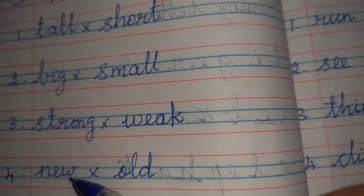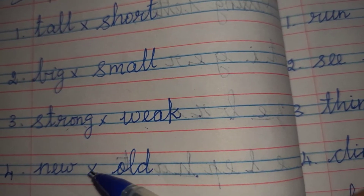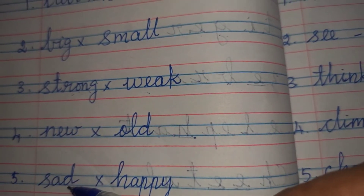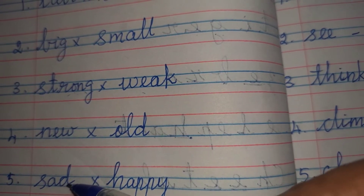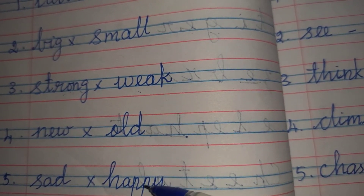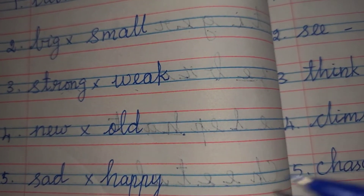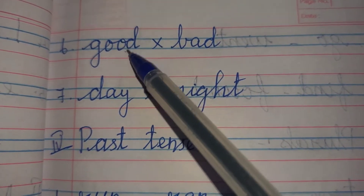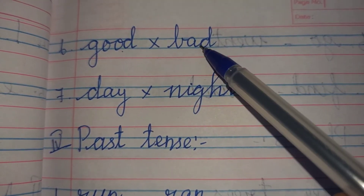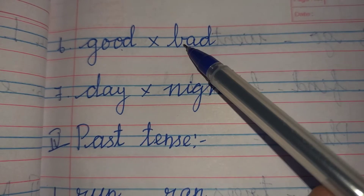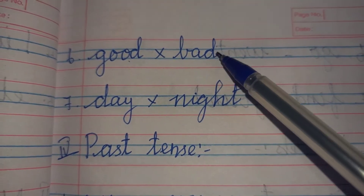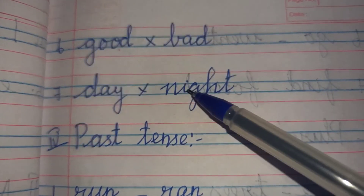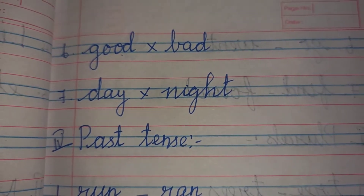New, N-E-W, New. Old, O-L-D, Old. Sad, S-A-D, Sad. Happy, H-A-P-P-Y, Happy. Good, G-O-O-D, Good. Opposite — Bad, B-A-D, Bad. D-A-Y, Day. N-I-G-H-T, Night.